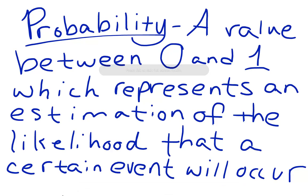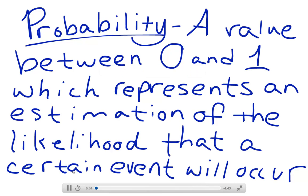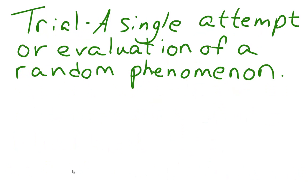Probability can be described as a value between 0 and 1, which represents an estimation of the likelihood that a certain event will occur. When getting started in working with probabilities, there are a few definitions that you need to know.